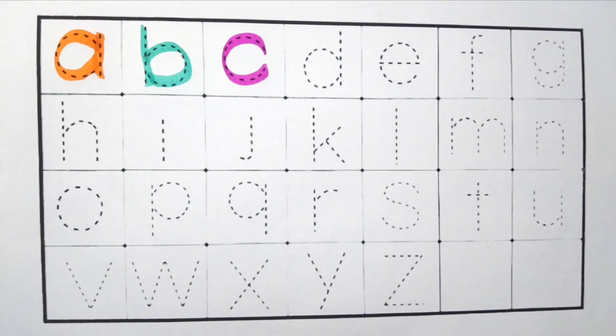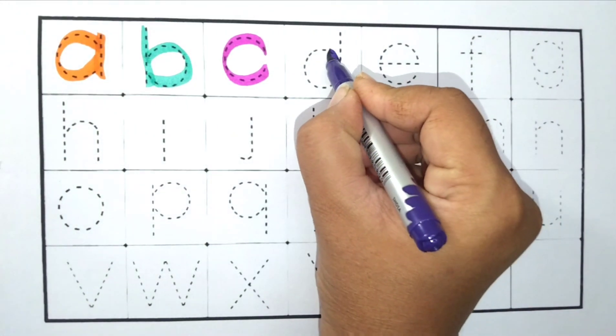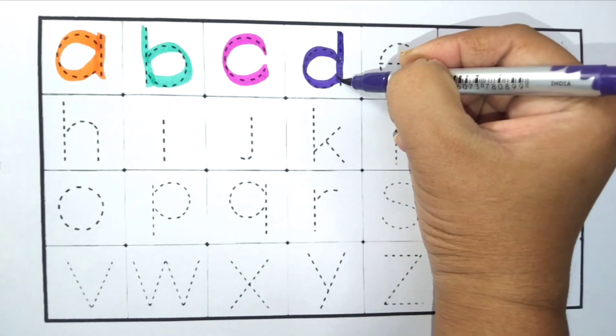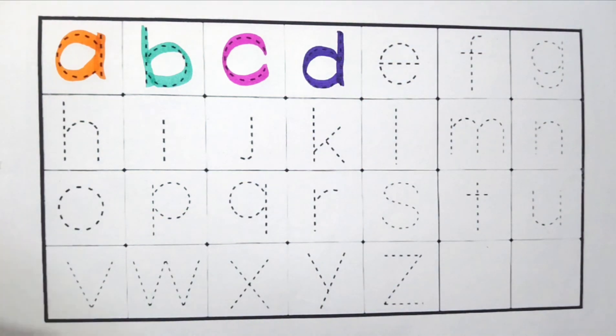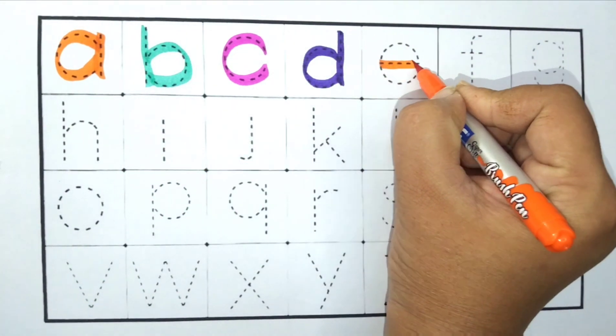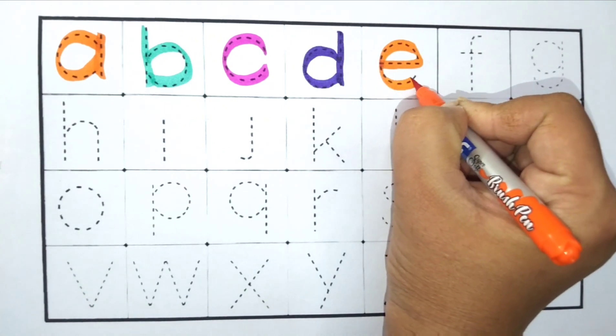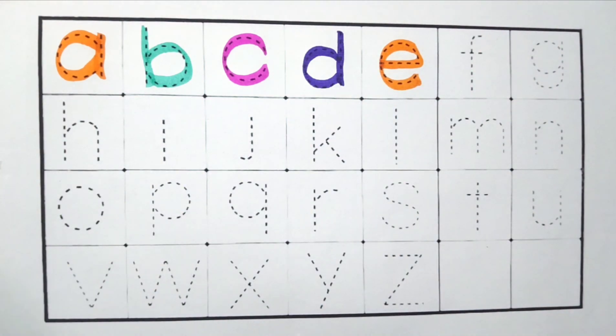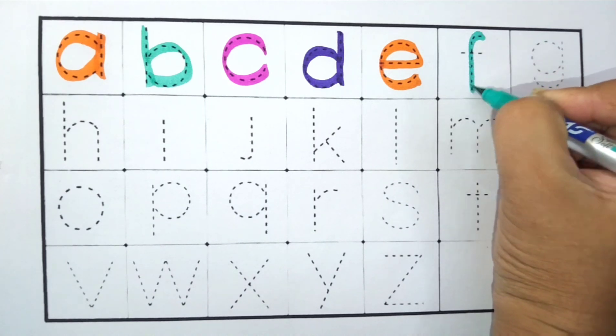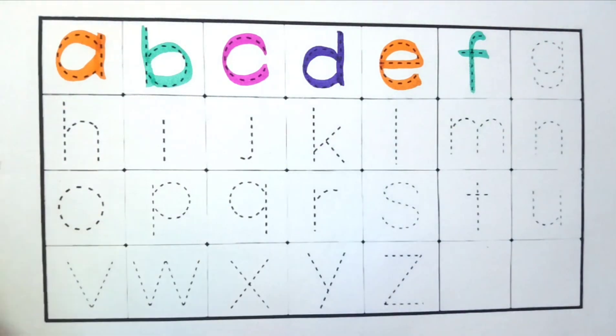Purple color. D for Dog. Orange color. E for Elephant. Sea green color. F for Fish.